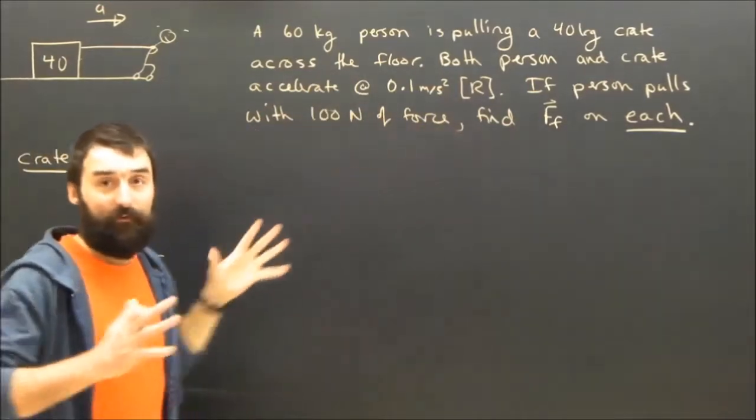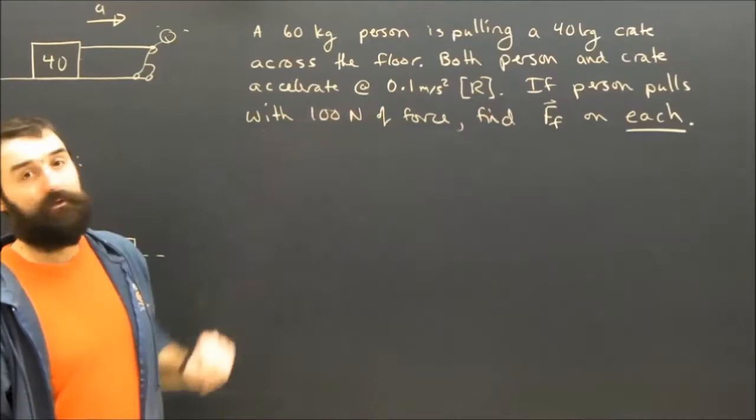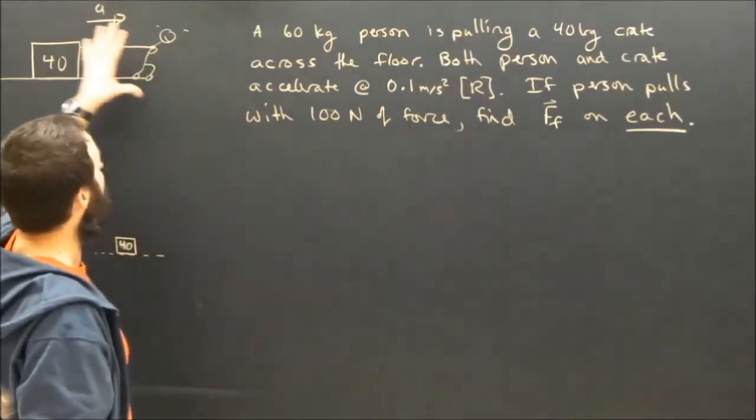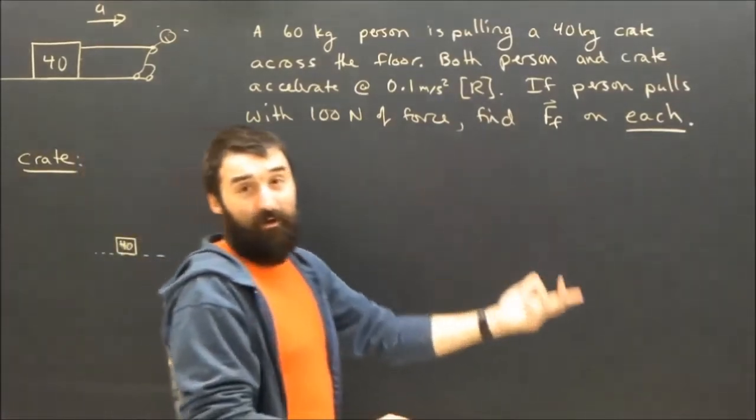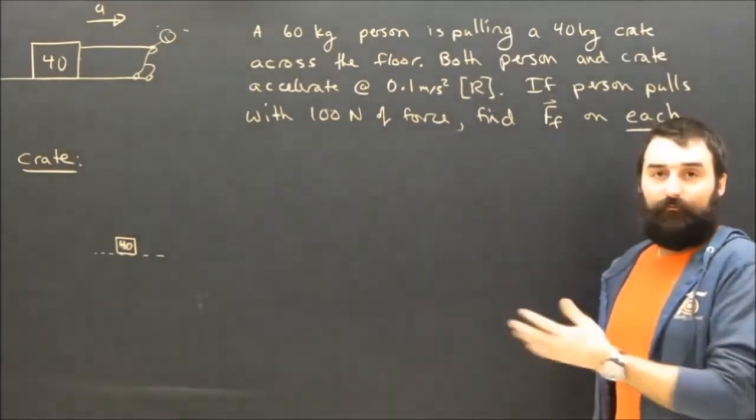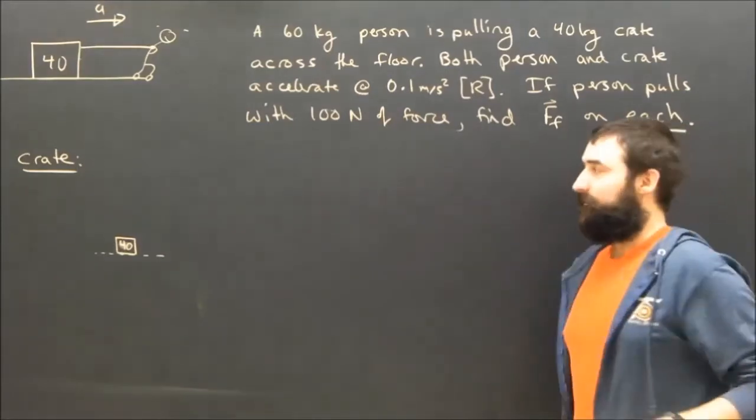Both the person and the crate are accelerating that way at 0.1 meters per second squared to the right. So the person is pulling the crate with a force of 100 newtons using the rope, and what is the friction on both the crate and the friction on the dude?